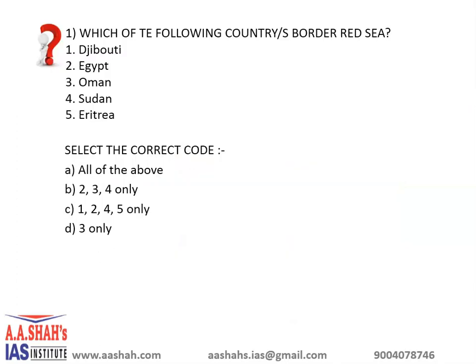Which of the following countries border the Red Sea? 1st Djibouti, 2nd Egypt, 3rd Oman, 4th Sudan, 5th Eritrea. Select the correct code. A: All of the above. B: 2, 3, 4 only. C: 1, 2, 4, 5 only. D: 3 only. You can pause the video and mention your answers in the comment section below.